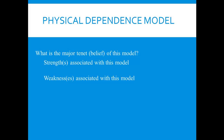Another strength of the physical dependence model is that it offers an explanation for why people work so hard to get drugs. If the withdrawal symptoms are awful and an individual is trying to avoid them, that explains why they'll go to great lengths to procure and self-administer a drug.